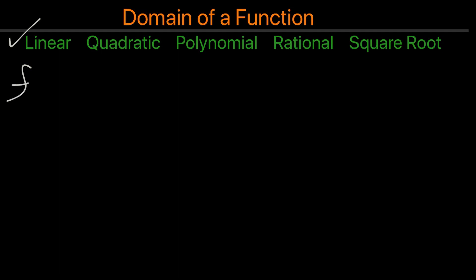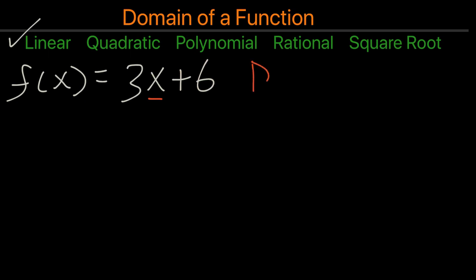Here is an example of a linear function. What is the domain of this function? The x value in this case could be any number from negative infinity all the way to positive infinity. So the domain will be negative infinity to positive infinity.